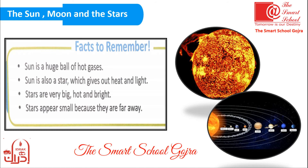Now we will read the Facts to Remember. There are four facts to remember. First: the sun is a huge ball of hot gases. Second: the sun is also a star which gives out heat and light. Third: stars are very big, hot, and bright. (Sitare bohut bade, garam aur roshan hote hain.) Fourth: stars appear small because they are far away. (Sitare hume chhote nazar aate hain kyunki wo humse kaafi door hain.)